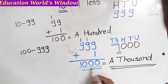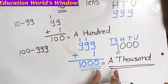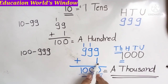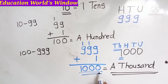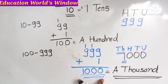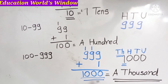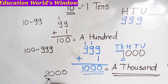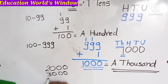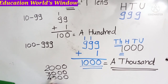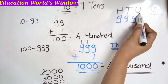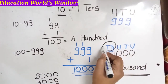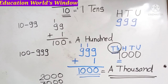A thousand is the smallest 4-digit number. It is a 4-digit number. This is called 1,000. Two thousand, three thousand, four thousand — this is the next place. Units, tens, hundreds — and now thousands, the 4th place. A thousand is the smallest 1,000.